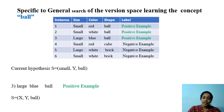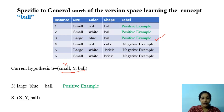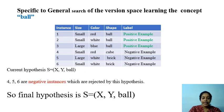Again iterating, we encounter a positive example: large, blue, ball. Checking against our current hypothesis (small, y, ball): large and small do not match. Blue and y — since y is a variable it can accept any value, so that is okay. Ball is also accepted. We must generalize the size attribute by replacing it with a variable x. The current hypothesis is now (x, y, ball).